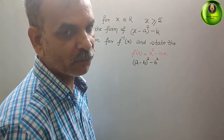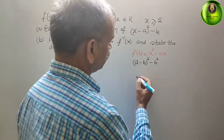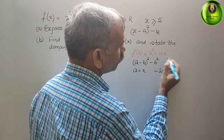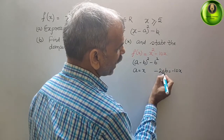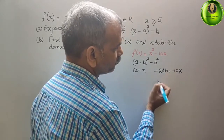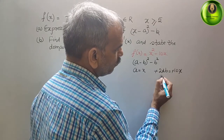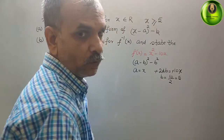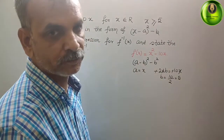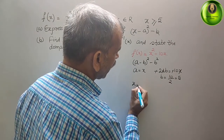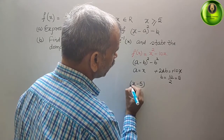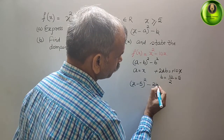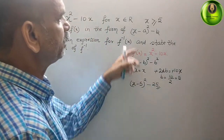Here, a squared is x squared, therefore a is equal to x. And minus 2ab is equal to minus 10x. We know a is equal to x, so b is equal to 10x/2, that is equal to 5. Substituting these two values, we get (x minus 5) whole square minus 25. So this is your expression in the required form.